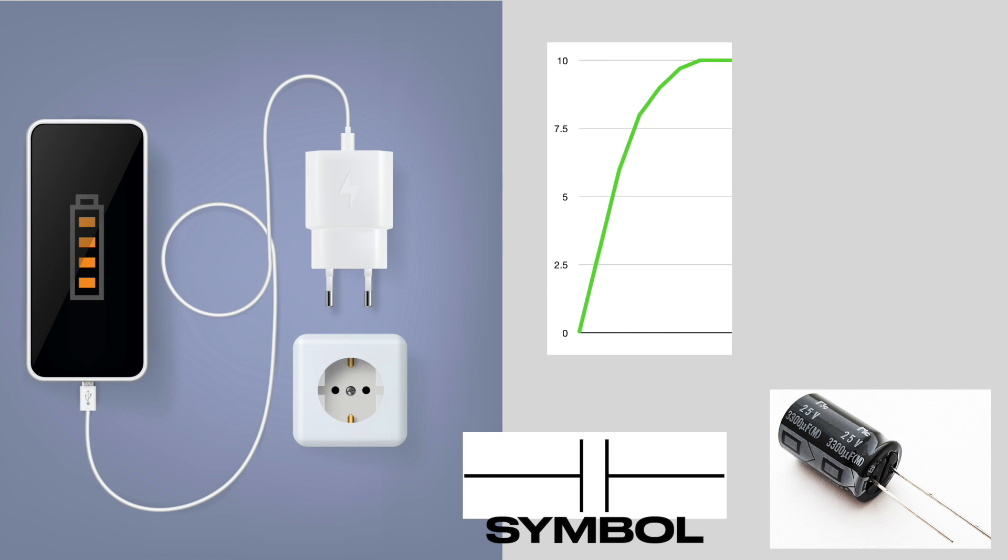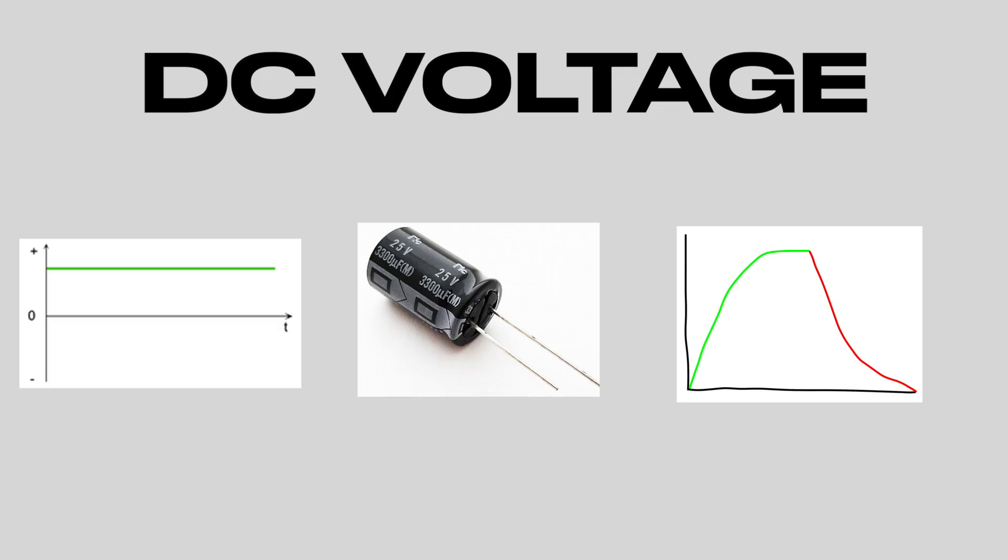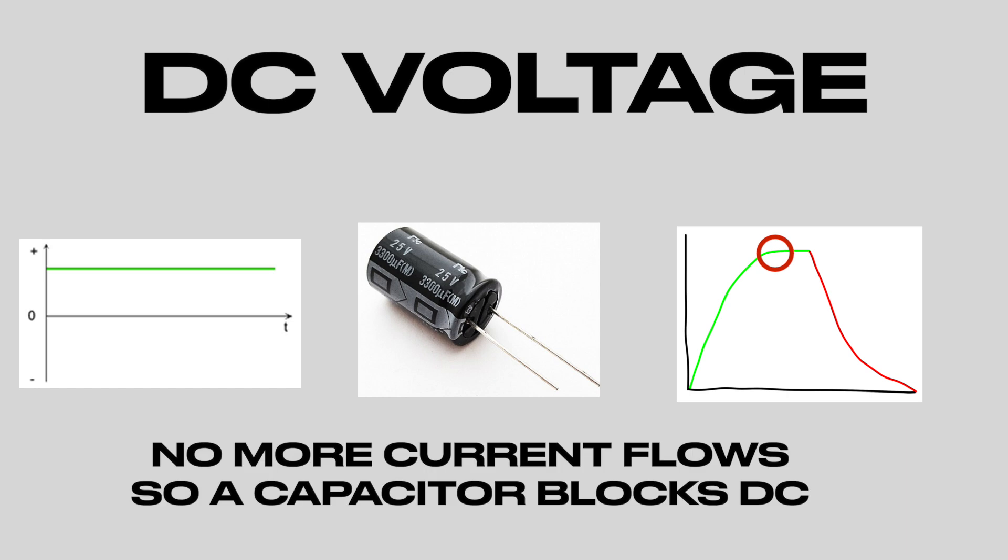And of course, if you unplug your phone, the battery will go down until it runs out. And that's just the same as a capacitor. If there's no current flowing into it, the charge will just drain over time. So if you give a capacitor voltage, it will just go up until it's fully charged and then stop and no more current will flow. So it blocks DC because if you give it DC, current will stop flowing.